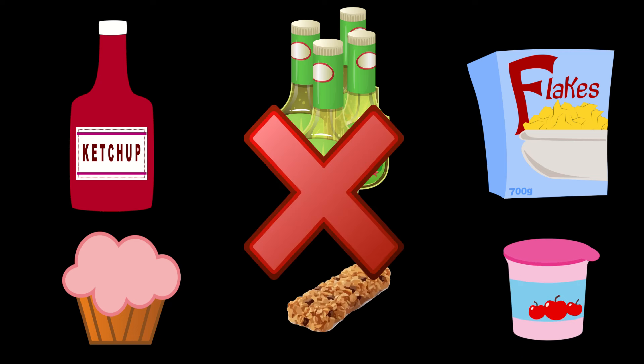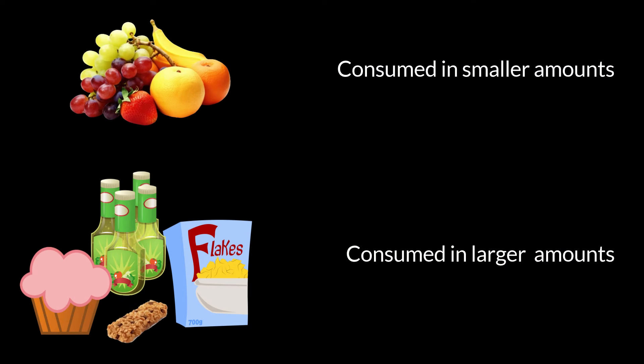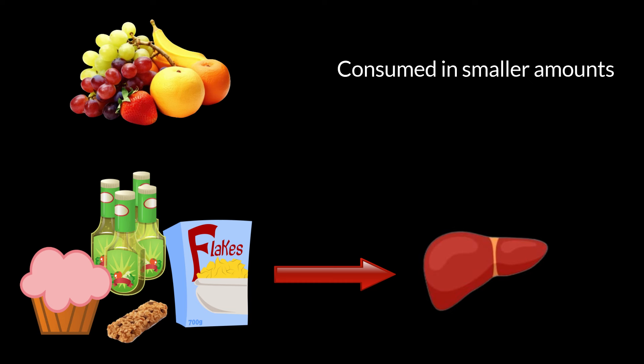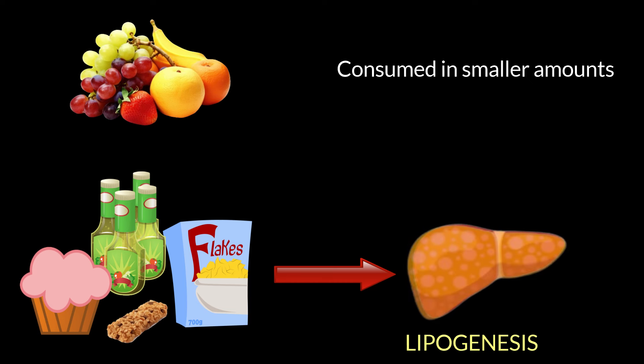The amount of fructose we get from fruits is harmless because we consume smaller amounts and it's hard to overdose. However, packaged and processed foods pack an excessive amount of fructose or high fructose corn syrup, and these foods are also very addictive, so we end up overeating them and overdosing on fructose. Excess fructose induces a state of lipogenesis, or fat storage, in the liver, which increases the risk and progression of fatty liver disease.